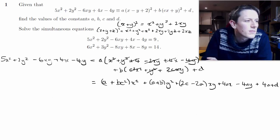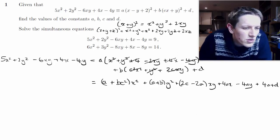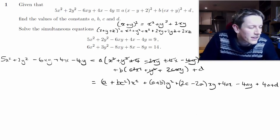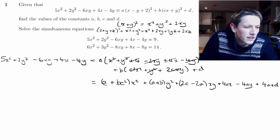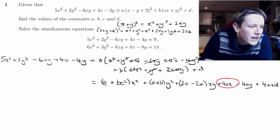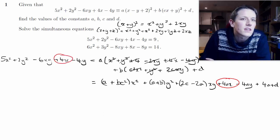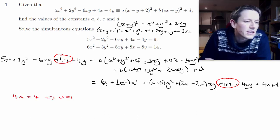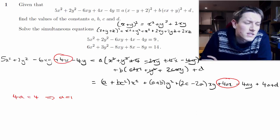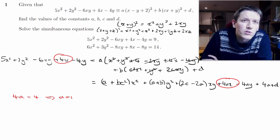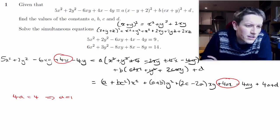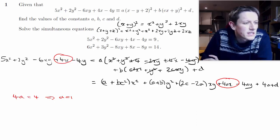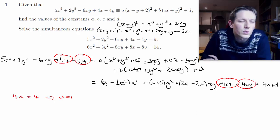Now I can start matching these terms up, trying to do this in an order where I can get at the terms reasonably quickly. Looking at the x term: 4ax equals 4x, so 4a = 4, giving a = 1. We should check for consistency — the y term −4ay is also consistent with −4y. So that's good.